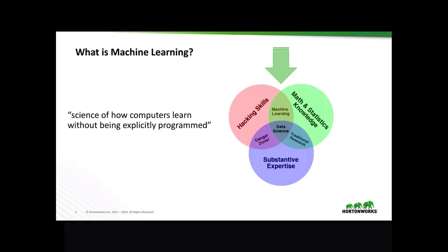So what is machine learning? It's a science of how computers learn without being explicitly programmed. It lies at the intersection of hacking skills and math and statistics without the need of substantive expertise. That's because the machine learning algorithms don't need to know the data type being used for training — they don't need to know, for example, that this is financial or medical data.